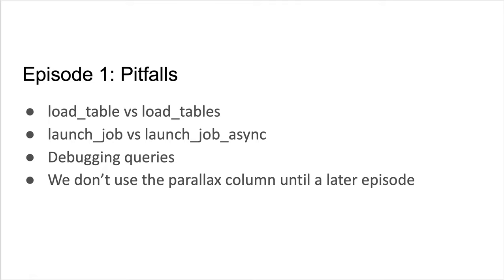Here are a few things to watch out for in episode one. There are two functions, load_table and load_tables, that are both described in the episode text and are easy to mistake for each other. Learners often confuse the methods launchJob and launchJobAsync — if only 2,000 results are returned, it is likely that they used launchJob when they meant launchJobAsync. The AstroQuery interface doesn't provide useful error messages, which is why incremental building and testing of queries is so important. Finally, we query the parallax column but don't actually use it for a few episodes.